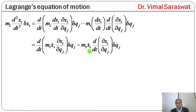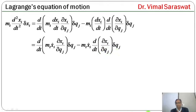Since dxi/dt = xi_dot, replacing d/dt terms with xi_dot: mi * d²xi/dt² * δxi = [d/dt(mi * xi_dot * ∂xi/∂qj) - mi * xi_dot * d/dt(∂xi/∂qj)] * δqj. Also, ∂xi_dot/∂qj_dot = ∂xi/∂qj.